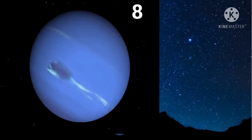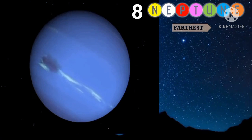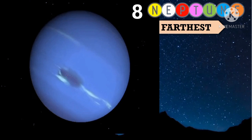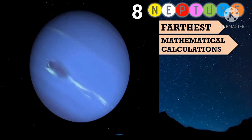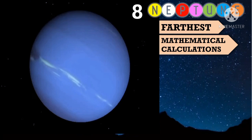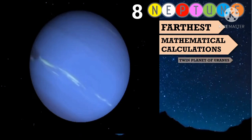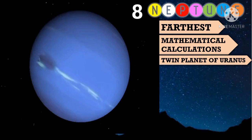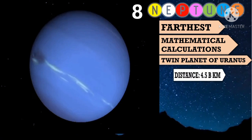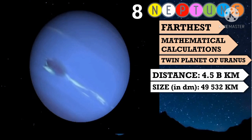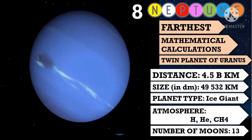The last planet is Neptune. It is the farthest planet from the sun and the first planet to be discovered using mathematical calculations. Neptune and Uranus are called twin planets because they have about the same size and mass. Like Uranus, Neptune is also an ice giant with rings and 13 moons.